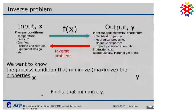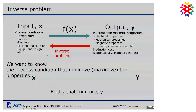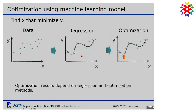However, in most cases, we want to know the process condition that minimizes the properties. This means the inverse problem of prediction models. The input parameter of the machine learning model is process conditions, and the output parameters are properties. But we want to know the process conditions that minimize properties. This is the inverse problem of machine learning. To solve this inverse problem, one method is optimization.